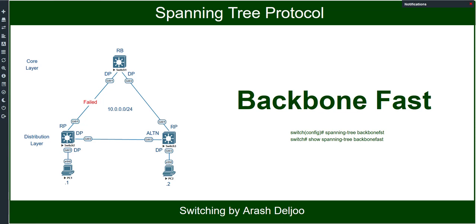Switch2 should announce itself as the root bridge. Inferior BPDUs are sent from Switch2, a designated bridge that has lost its connection to the root bridge, making it announce itself as the new root bridge. Normally, Switch3 must wait for the max-age timer — about 20 seconds — to expire before responding to the inferior BPDU.